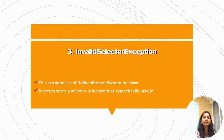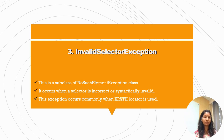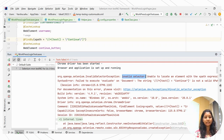The next exception is InvalidSelectorException, which is a subclass of the NoSuchElementException class. It occurs when a selector is incorrect or syntactically invalid. This generally happens when you are writing your own custom XPath — you may be passing some tag name or attributes inside the XPath that the DOM is not allowing due to some technical reason. It throws 'InvalidSelectorException: unable to locate an element within the XPath expression.'